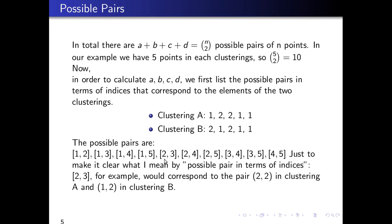Now we want to list the possible pairs in terms of integers that correspond to the elements of the two clusterings. Let's have an example — let's pick two and three. Two and three correspond to the second element and the third element in cluster A, which is the pair (2, 2) in cluster A. The second and third elements in B correspond to the pair (1, 2) in cluster B.